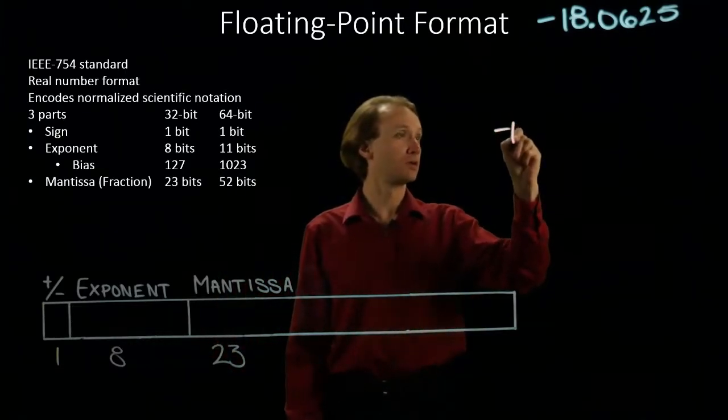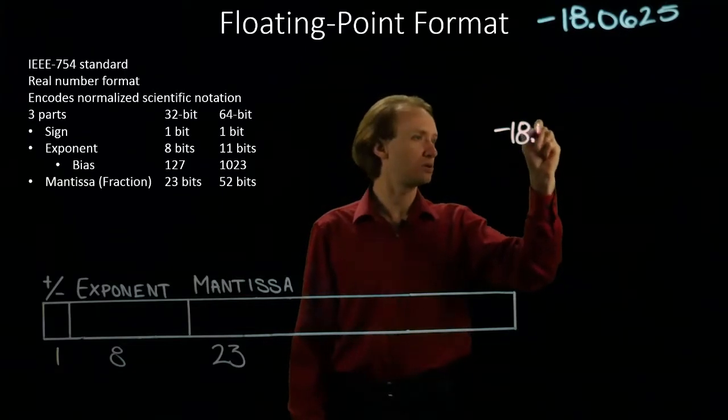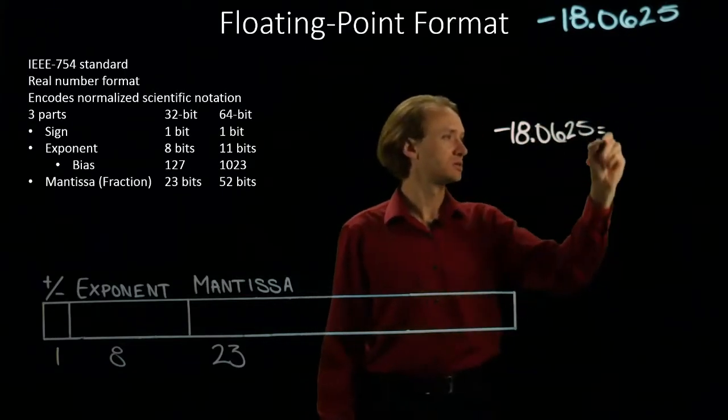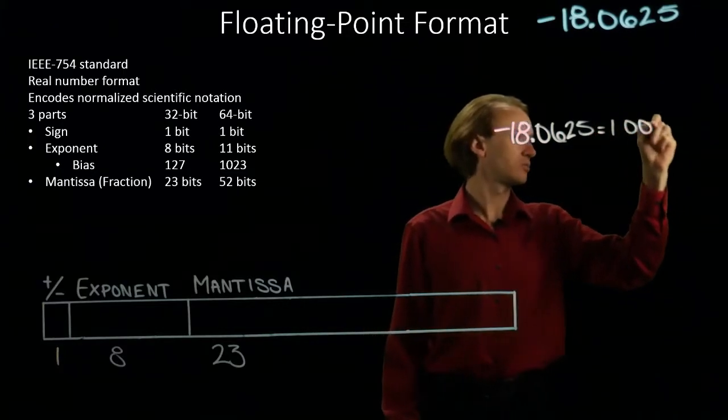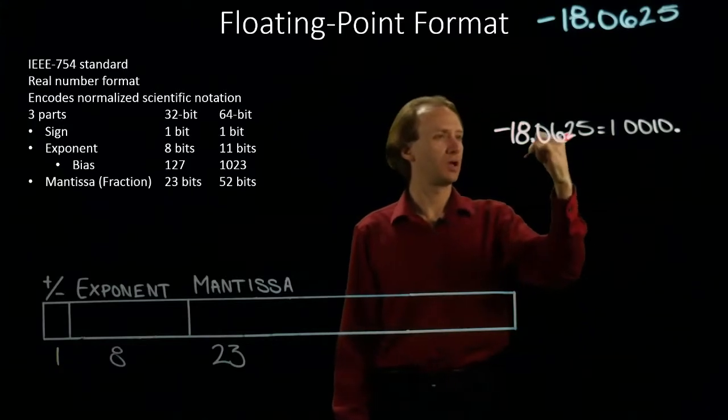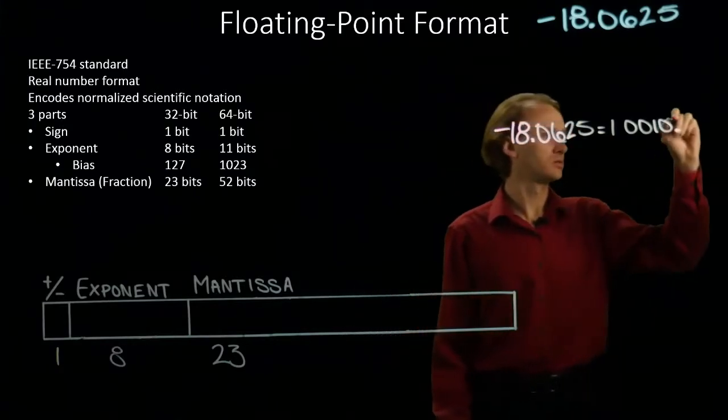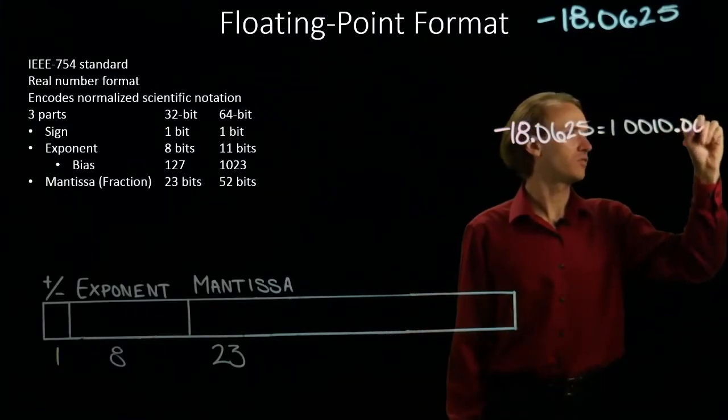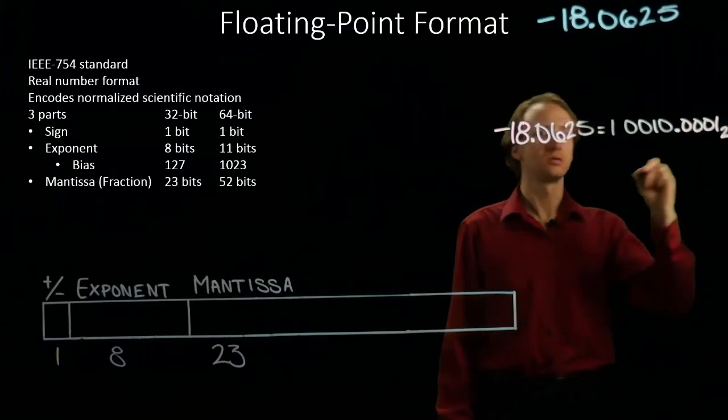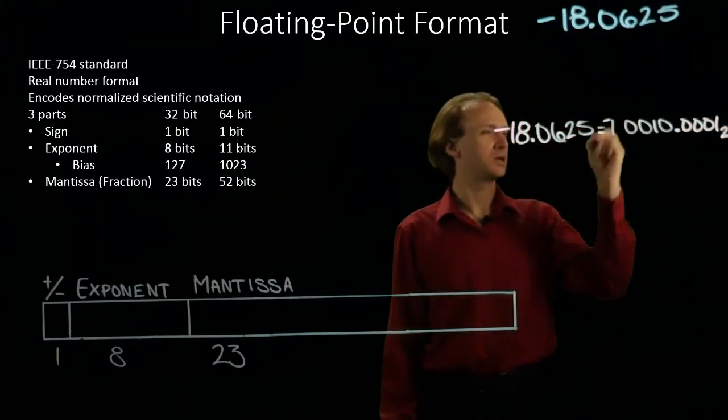So negative 18.0625 is 16 plus 2 plus 1 sixteenth. So no halves, no fourths, no eighths, but 1 sixteenth. And this is a negative number.